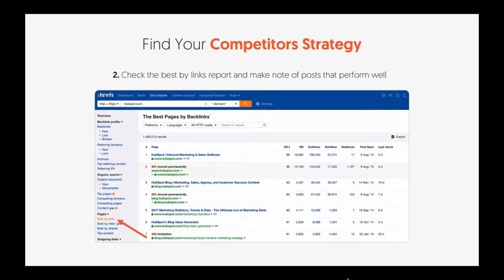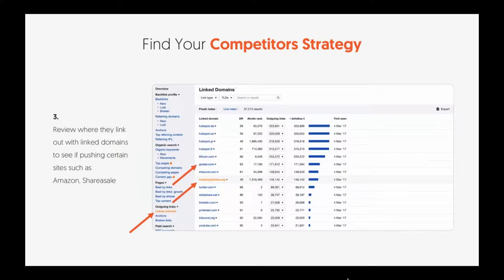This will all help you determine what your competitors are doing. You can also go to Linked Domains. When you go into Linked Domains, you can see who's linking in — these are their strategies. For example, if they're linking out to Grader, that's HubSpot's website where they're generating traffic from their content.